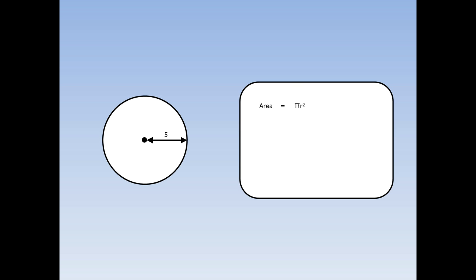Here is a circle with radius 5. To find out the area, first of all we write out the formula: area equals pi r squared. Pi is 3.14 and r squared means the radius times the radius.